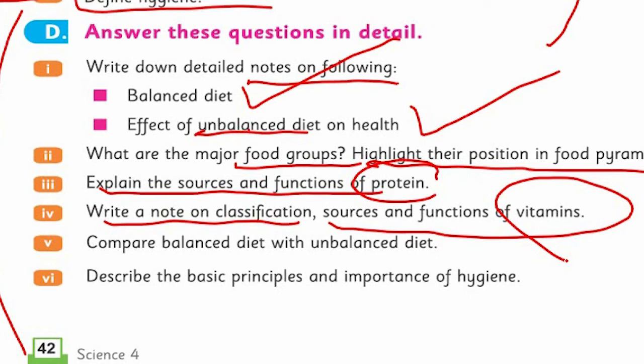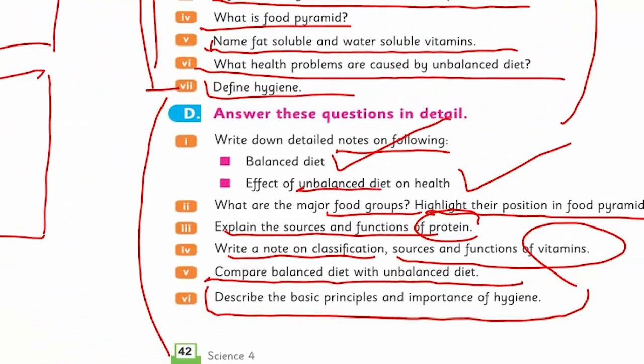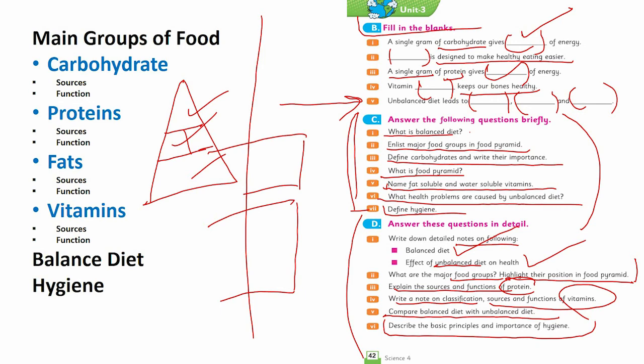There was an interesting table where I told you vitamins A, B, C, D, E - I said there's no F, instead there's K. So six vitamins are there. Make a beautiful table - you already made it in your notebook. Compare balanced diet and unbalanced diet. Describe the basic principles and importance of hygiene. Look at hygiene importance in detail.